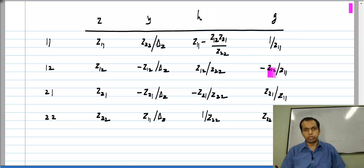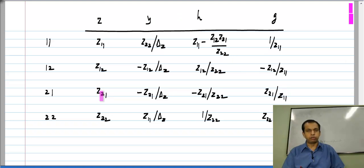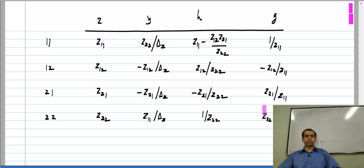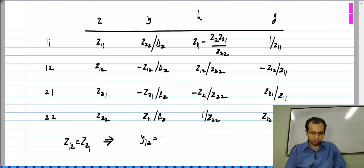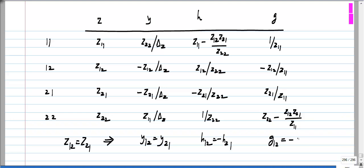Similarly, for G parameters: G12 is minus Z12 divided by Z11, and G21 is Z21 divided by Z11. If Z12 equals Z21, then clearly G12 will equal minus G21. What I am trying to point out is that reciprocity is a property of the network — it is not related to what parameters you choose. So Z12 = Z21 implies Y12 = Y21, or H12 = −H21, or G12 = −G21, and these hold good regardless of which parameter set you choose.